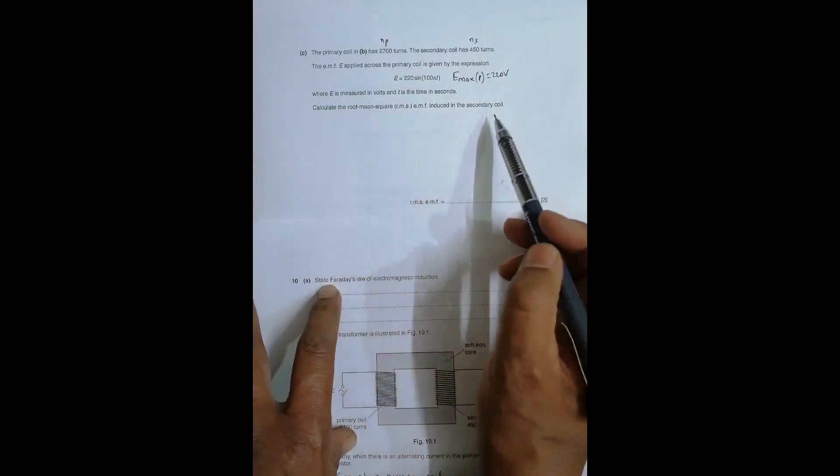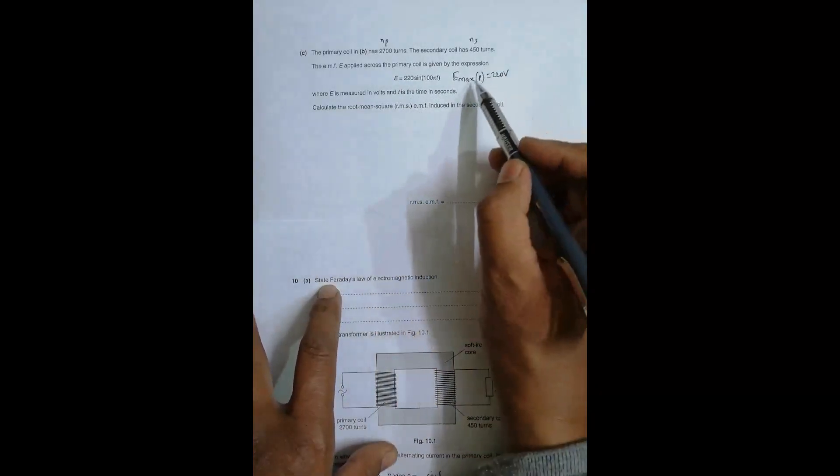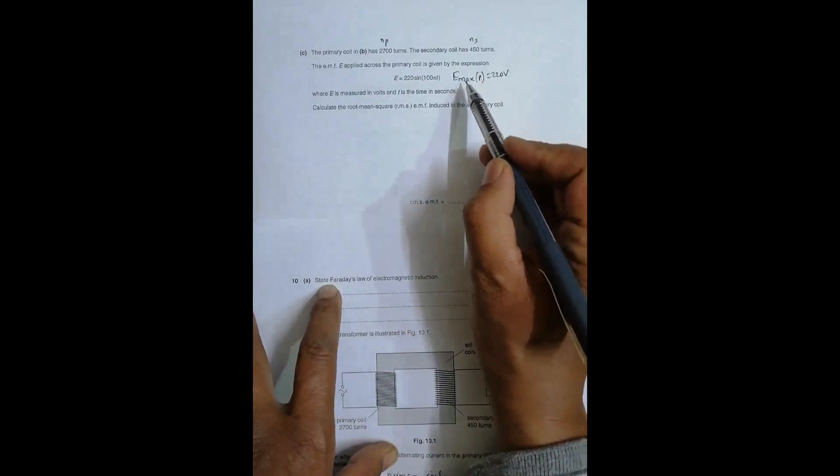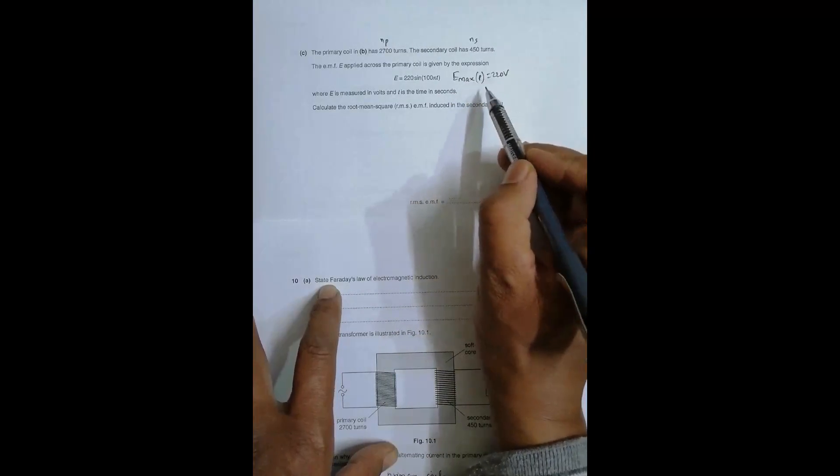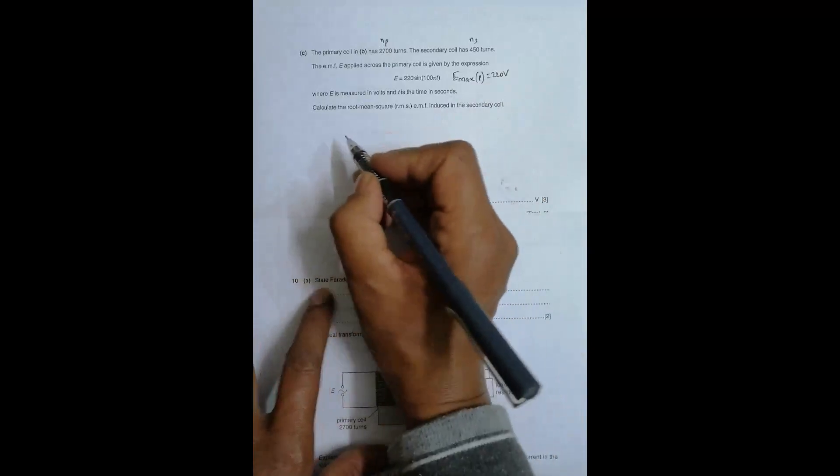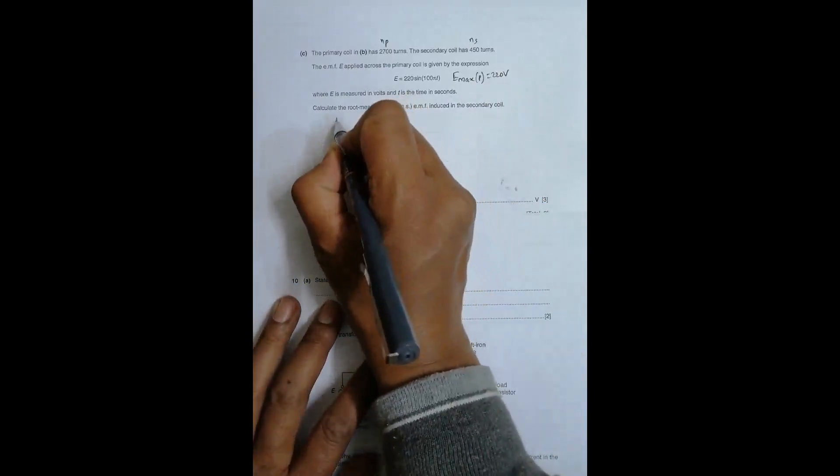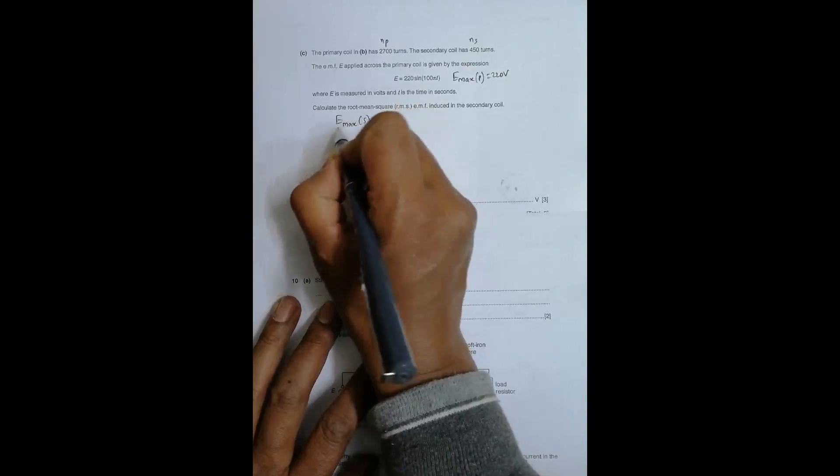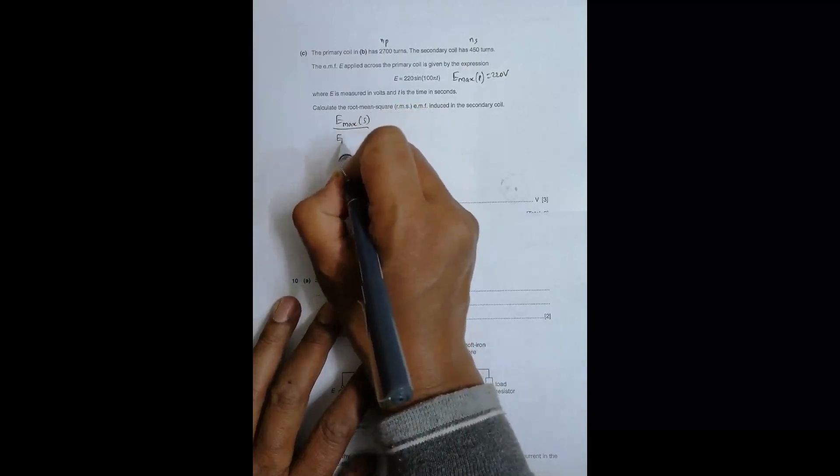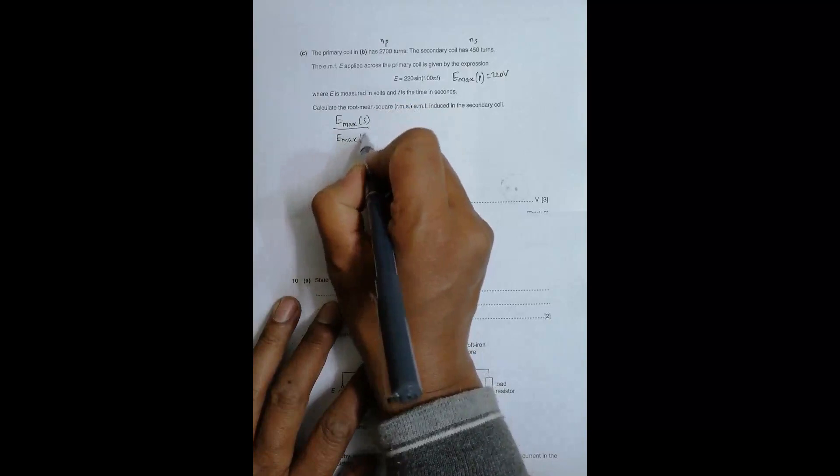They've given the primary maximum, so let's find the secondary maximum. The equation will be: E_max secondary divided by E_max primary should be equal to Ns divided by Np.